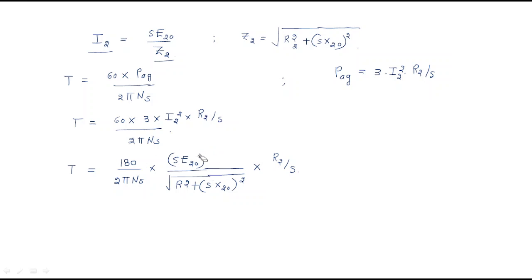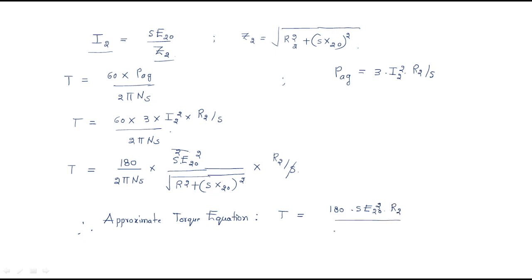After substitution and simplification, with s cancelling once, the final approximate torque equation of the three-phase induction motor is: torque equals 180·s·E_2_0²·R_2 divided by 2π N_s times the quantity (R_2² + (s·X_2_0)²). This is the final approximate torque equation.